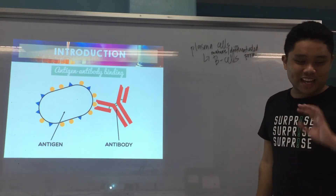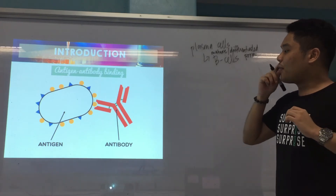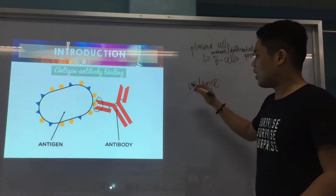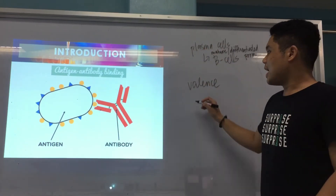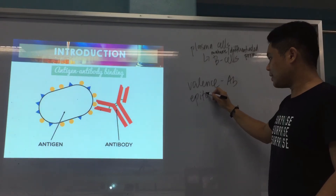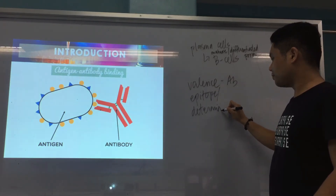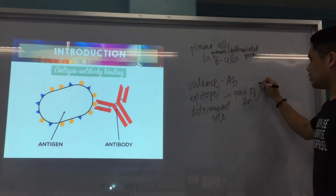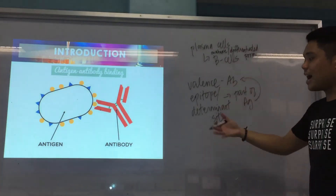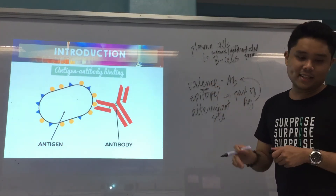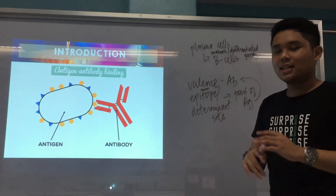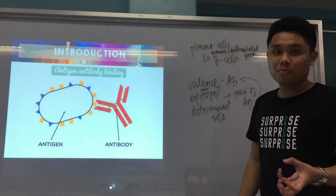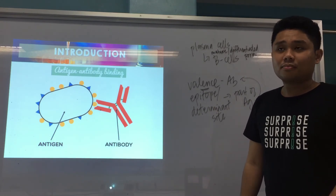Now, the part that the antibody uses for binding is known as the valence, and the part of the antigen that binds to an antibody is known as the epitope or the determinant site. The epitope is the part of the antigen that binds to your antibody, and the valence is the part of the antibody that binds to your antigen. We utilize that reaction to develop more immunoassays for the detection of infections.